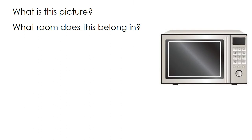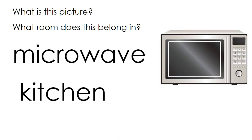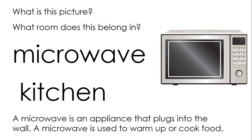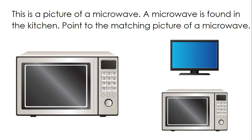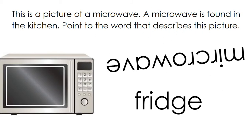What is this picture? This is a microwave. A microwave is an appliance that plugs into the wall. A microwave is used to warm up or cook food. This is a picture of a microwave. A microwave is found in the kitchen. Point to the matching picture of a microwave. That's a match, good for you. Point to the word that describes this picture. Microwave.